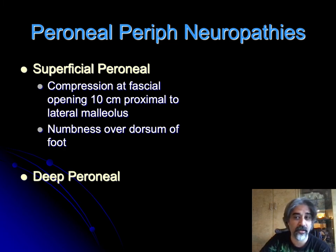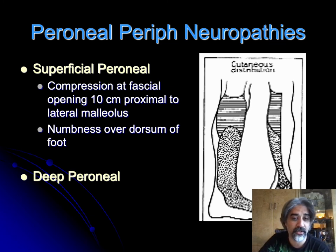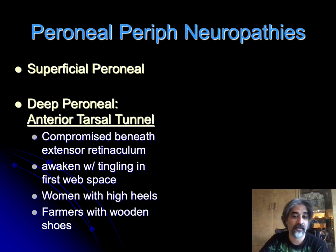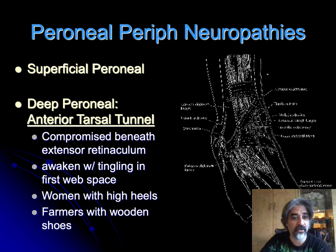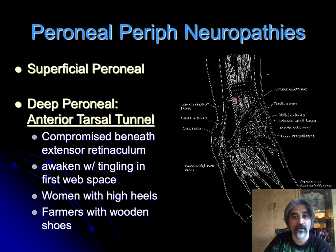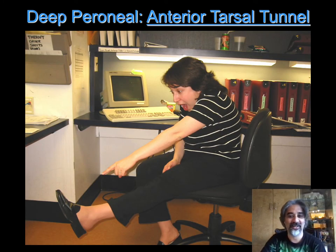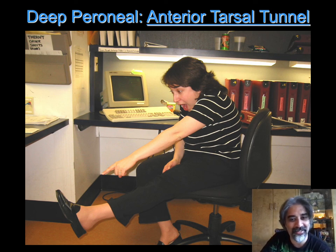The superficial peroneal nerve can be affected — fortunately those patients will have less muscular and more sensory complaints. But if it's deep peroneal, they'll have a lot of motor complaints and numbness and tingling just of that first web space. There's something called anterior tarsal tunnel syndrome — it's very, very rare, more rare than tarsal tunnel — and basically at the front of the ankle it gets compressed and only the deep peroneal is affected.